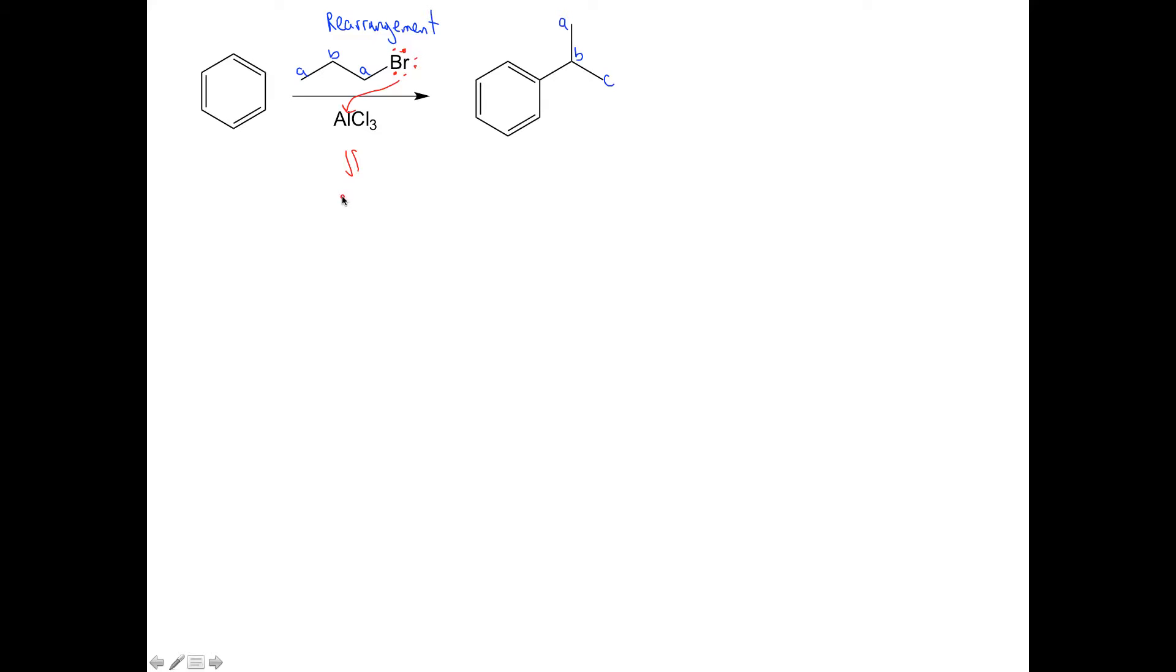Generating a species that has a new bromine-aluminum bond. So let's draw that in here. Al still has three chlorines.